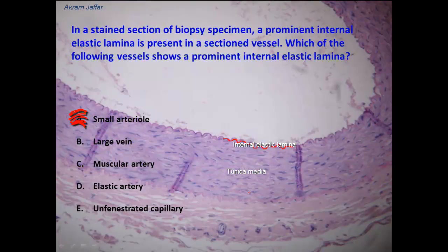This is the tunica media, which is predominantly containing smooth muscle fibers. Don't worry about these folds — these are artifacts because of the folding of the tissue during preparation of the section.